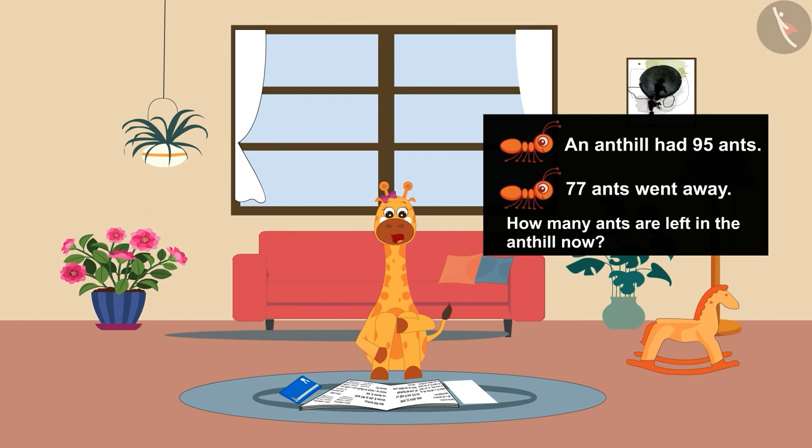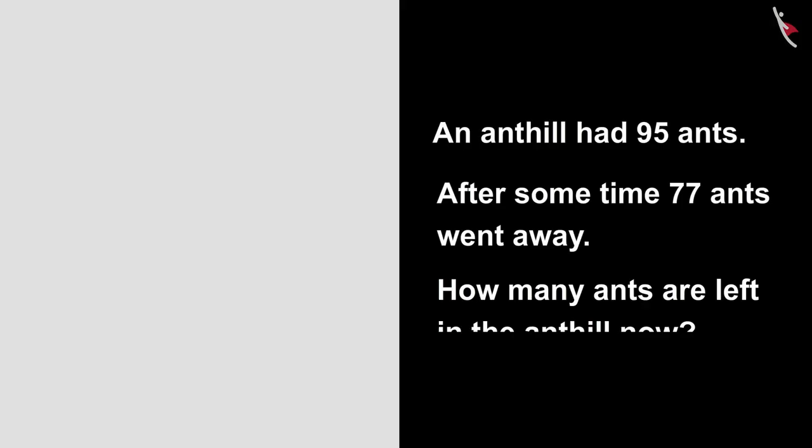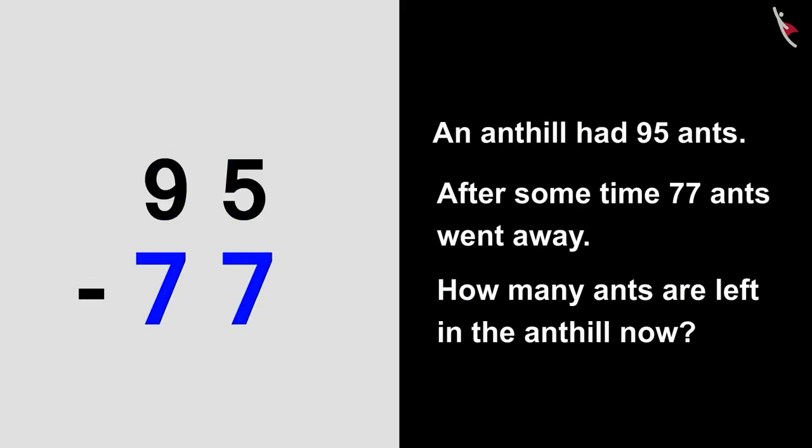An ant hill had 95 ants. After some time, 77 ants went away. How many ants are left in the ant hill now? 95 minus 77 is equal to what? Once again, we have to find the answer using subtraction.